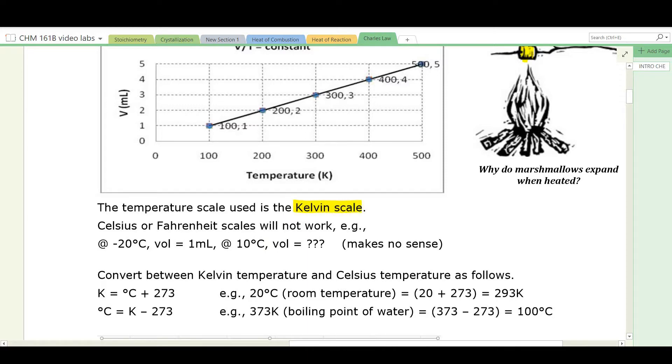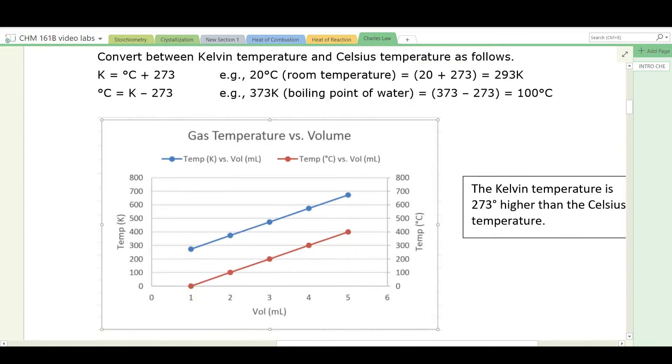So how do we convert between Kelvin and Celsius? Take a look at this graph. The red line is the temperature in degrees Celsius versus volume of a gas. And here it's plotted temperature in Kelvin versus volume of a gas. You can see that the Kelvin temperature runs parallel to the Celsius temperature. It's always this much higher. This much is 273 degrees. So Kelvin is degrees Celsius plus 273. Take room temperature, for example, 20 degrees C. What is that in Kelvin? Well, you simply add 273 to it and get 293. How about in the reverse? If you want to go from Kelvin to Celsius, you simply subtract 273. Do you see it here? 273 to zero. So let's take the boiling point of water is 373 Kelvin. What is that in Celsius? You simply subtract 273. And that's equal to 100 Celsius.